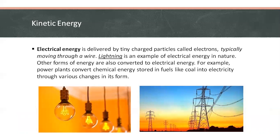Third one, we have electrical energy, which is delivered by tiny charged particles called electrons, typically moving through a wire. Lightning is an example of electrical energy in nature. Other forms of energy are also converted to electrical energy. For example, power plants convert chemical energy stored in fuels like coal into electricity through various changes in its form.